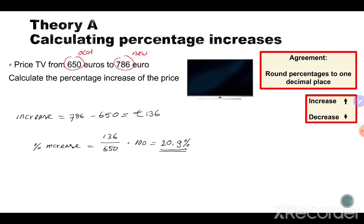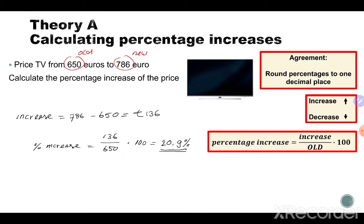So very important: if we make a formula from this situation, it is: percentage increase equals the increase in euros (or another unit) divided by the old price (old amount), then multiplied by 100. So here we know the TV increased by 20.9 percent.